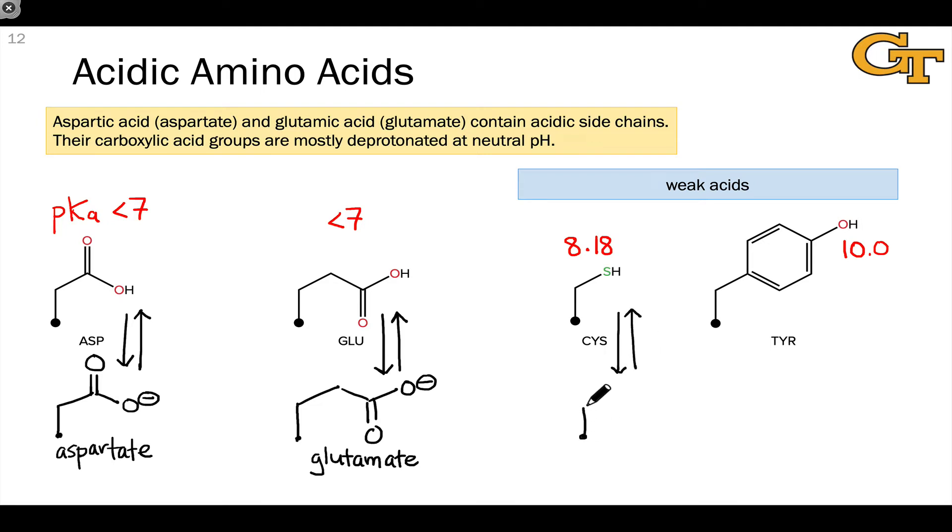So the thiolate structure for cysteine and the phenylate anion for tyrosine are often observed in enzyme active sites where pKa's can be modulated locally. And again, we'll talk about how exactly that works in a future video.